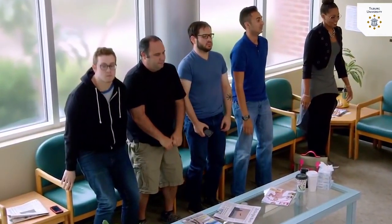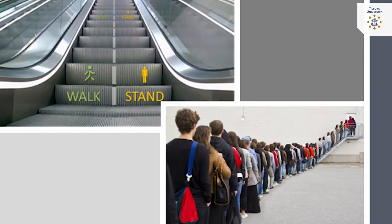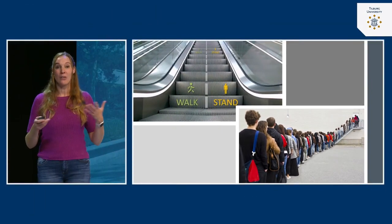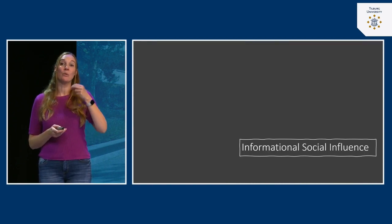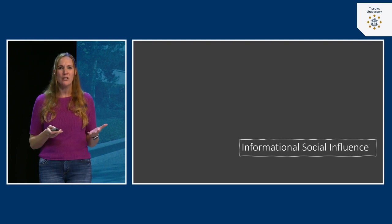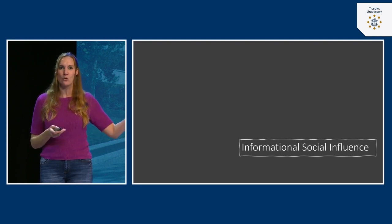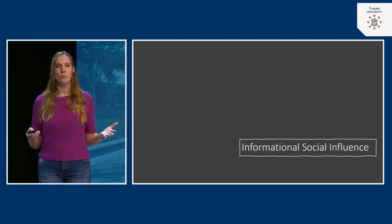So, other people give us information about how we're supposed to behave. When this happens, it's called informational social influence — when we rely on others to give us information on what to do. This especially happens when the situation is ambiguous to us and we don't really understand what's going on, as we saw in the waiting room experiment.